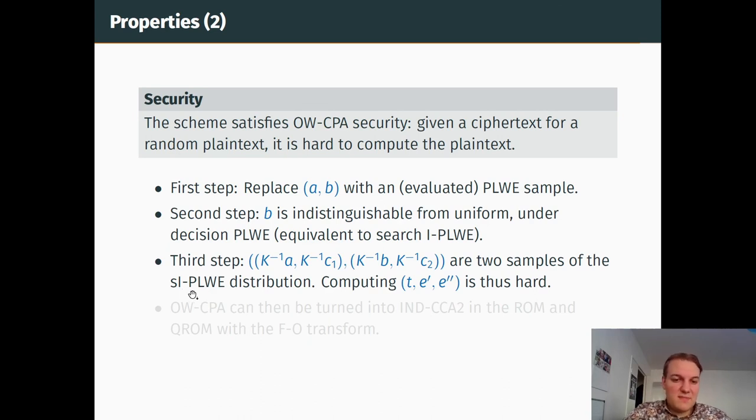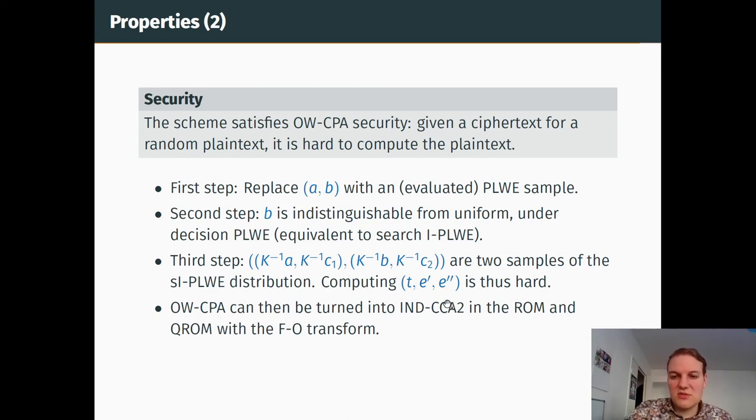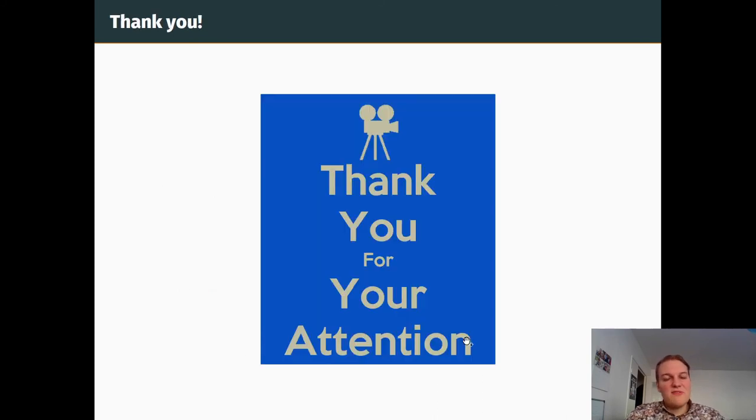The OWCPA assumption is something which is interesting because it can be turned into CCA2 key exchange mechanism in the random oracle model or quantum random oracle model using Fujisaki-Okamoto transforms. Thank you for listening up until now, and see you!